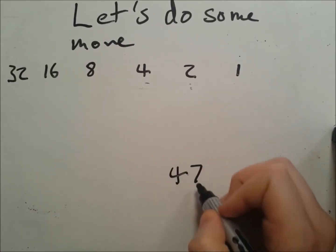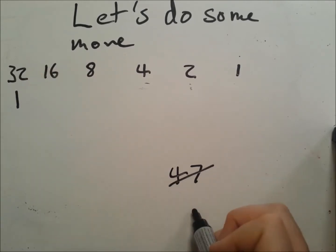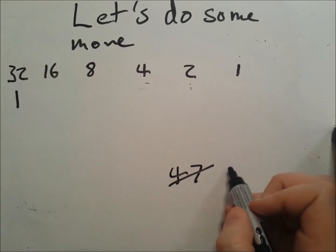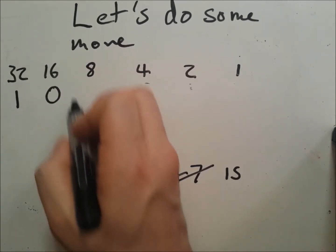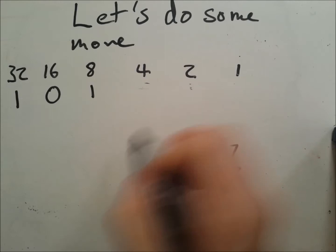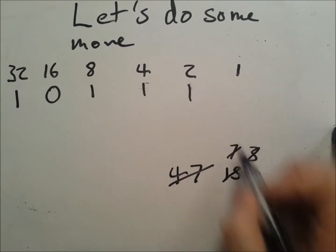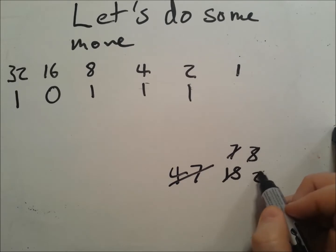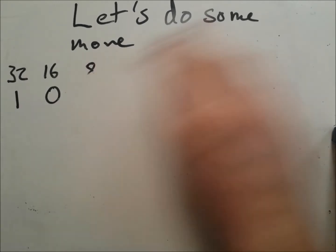Last one: 47. Getting to the big numbers now. There is a 32, and that leaves us with 15. There's no 16 in 15, so there is an 8, a 4, a 2, and a 1. So 1-0-1-1-1-1 is 47.